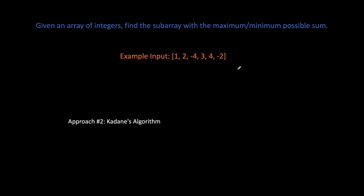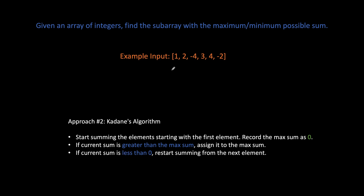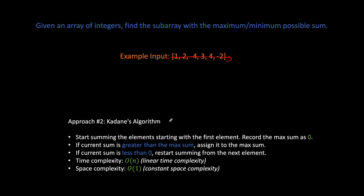Let's see the optimum solution: Kadane's algorithm. We're going to start summing the elements beginning with the first element and record the sum as zero. If the current sum is greater than the maximum sum, assign it to the maximum sum. If the current sum is less than zero, we restart summing from the next element. The time complexity is O(n) because we process the array only once, and the space complexity is O(1) since we don't store any extra information per element.